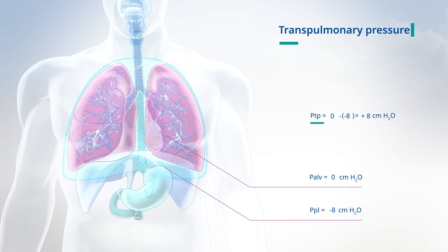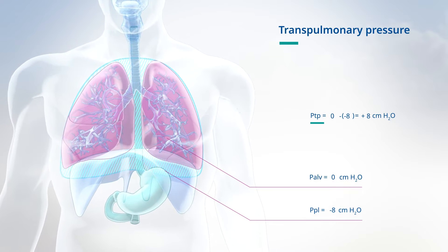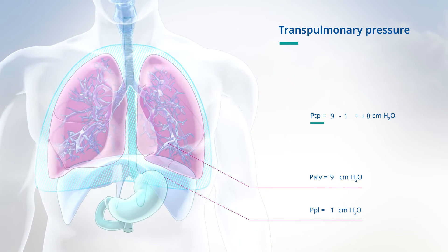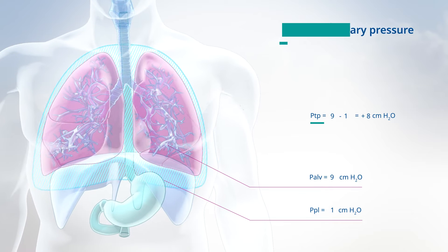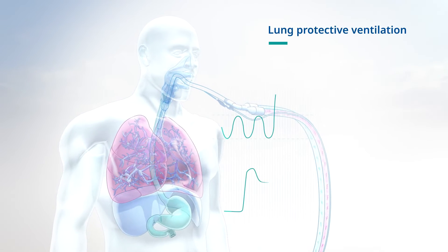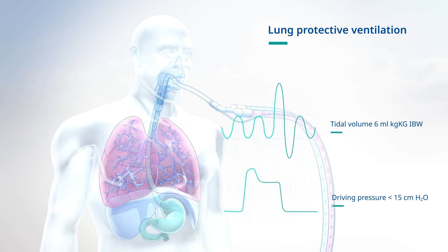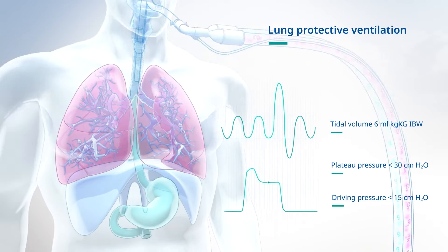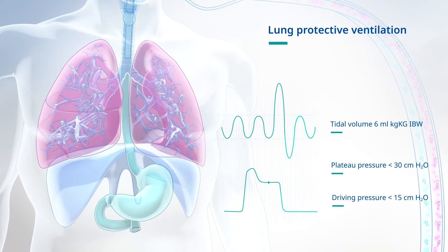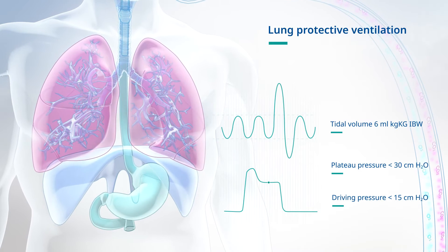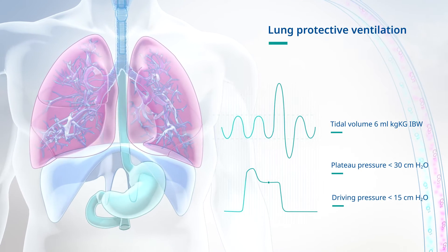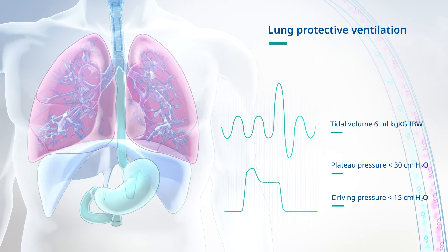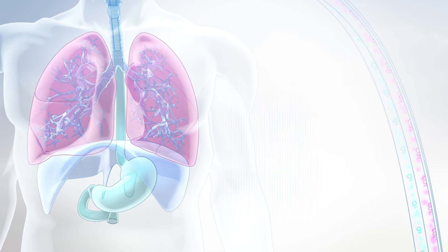We now know that it's not the plateau pressure but the transpulmonary pressures which are decisive for the prevention of ventilation-induced lung injury. In many cases, the patient's condition does not allow compliance with lung protective ventilation — such as a driving pressure of less than 15 cm water column, a tidal volume of less than 6 ml per kg of idealized body weight, and an end-inspiratory plateau pressure of less than 30 cm water column.